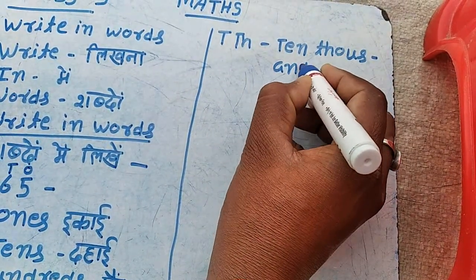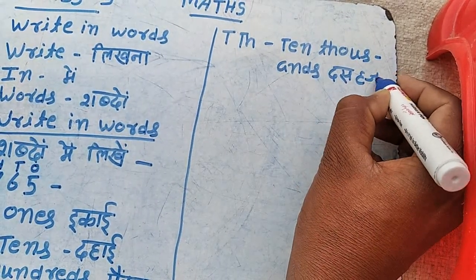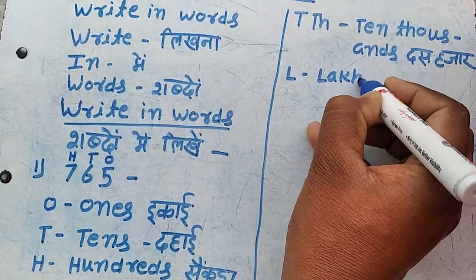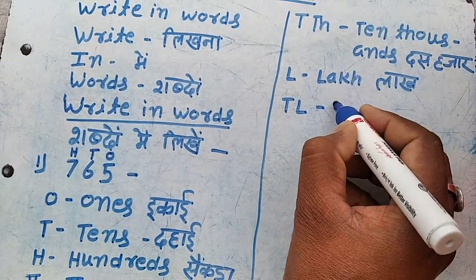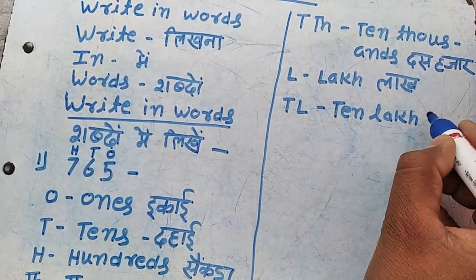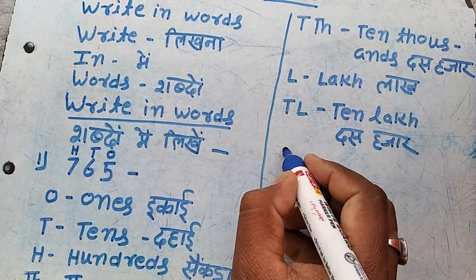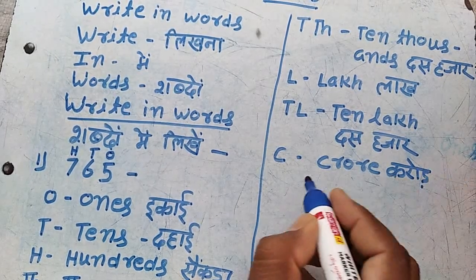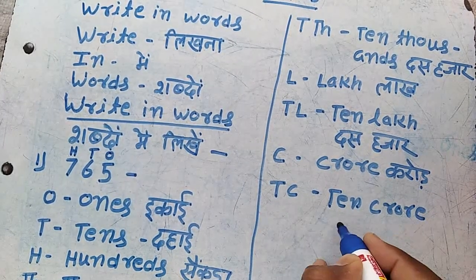10,000 — ten thousand. L means lakh — L-A-K-H. TL means ten lakh — 10,00,000. C means crore — C-R-O-R-E. TC means ten crore — 10 crore.